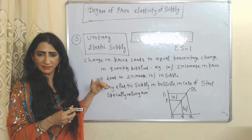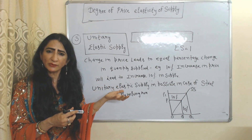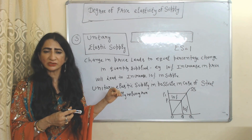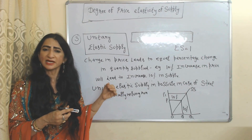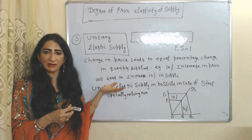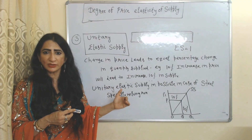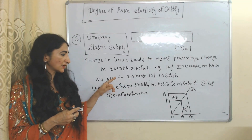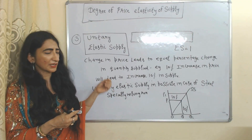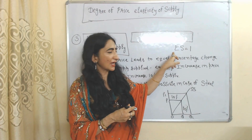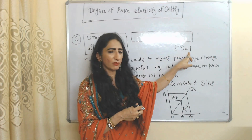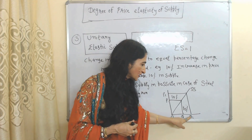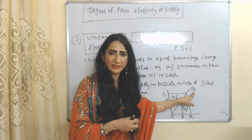Next is unitary elastic supply, which means a change in price leads to an equal percentage change in supply. For example, a 10 percent increase in price leads to exactly a 10 percent increase in supply. The SS curve represents the supply curve for unitary elastic supply.